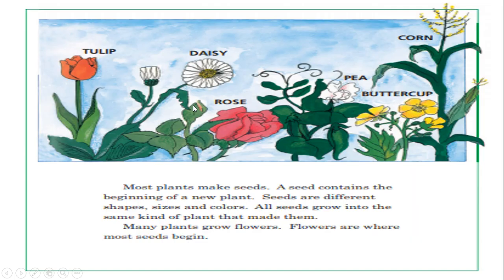On page 350, we have a picture of these amazing flowers — all types. Flowers are not just one kind; we have so many. We have the tulip, the daisy which has white petals and a yellow middle, the rose, pea, and buttercup — buttercup flowers are always yellow. And corn, which is this amazing tasty plant that we make popcorn out of.